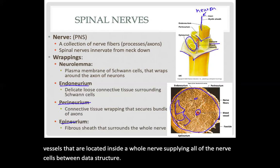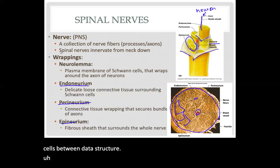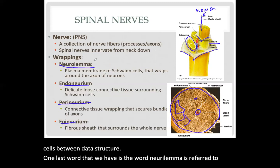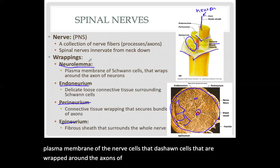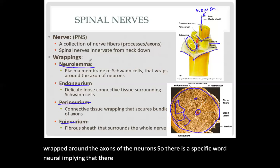One last term is neurolemma. Neurolemma refers to the plasma membrane of the nerve cells — specifically the Schwann cells that are wrapped around the axons of the neurons. There is a specific word with 'neuro' implying that they are associated with the nervous system.